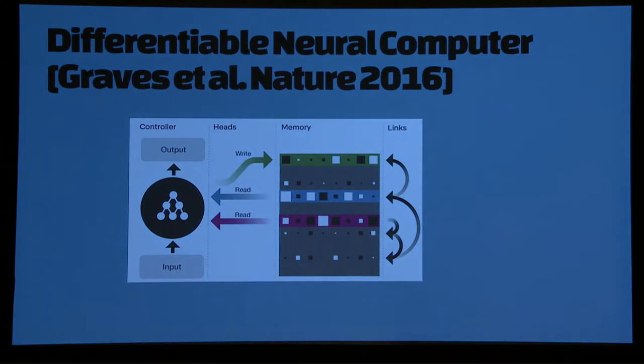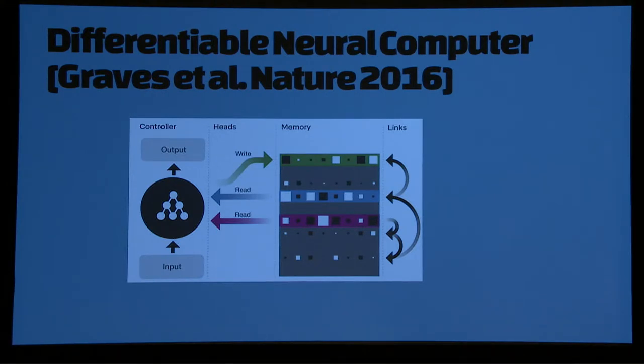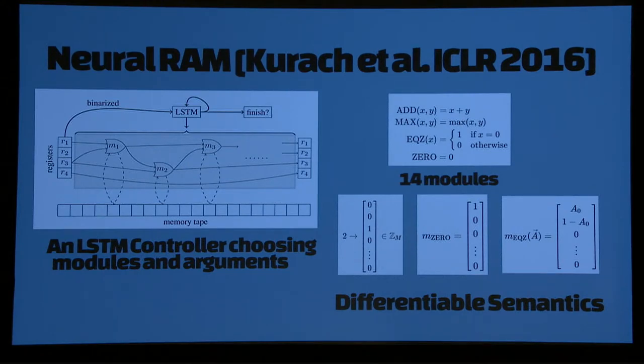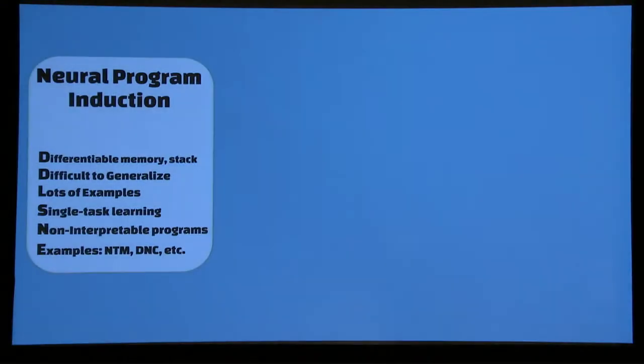The high-level idea in program induction is that the network itself is the program. One great example is this DNC work from DeepMind, where you have an LSTM controller which is augmented with some kind of differentiable memory with which you can read and write in a differentiable way. This can be trained in an end-to-end fashion. One particular work that I particularly liked was this thing called Neural RAM, where you have a set of modules and the goal is to come up with a circuit that satisfies some input. The main idea is you define semantics for these simple things in a differentiable way such that you could do backprop.